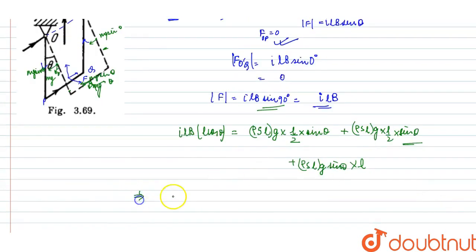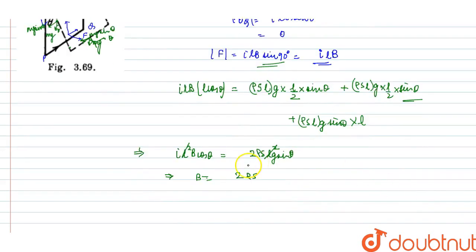Now we will equate. I L square B cos theta is equal to 2 rho S L G sin theta, and here L square gets cancelled. So B is equal to 2 rho S L G tan theta by I.